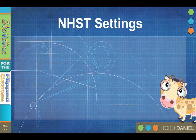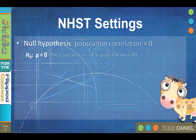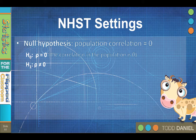You can use a correlation for hypothesis testing, or you can determine if a particular correlation is statistically significant. The null hypothesis is that the variables are unrelated; therefore, the correlation in the population is zero. The Greek letter for r is rho, so the null hypothesis for a two-tailed test would be H₀: ρ = 0. The alternative hypothesis would be ρ ≠ 0. Typically correlations are treated as two-tailed tests.